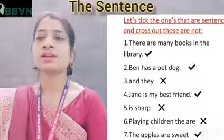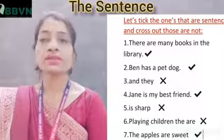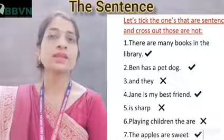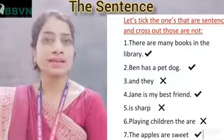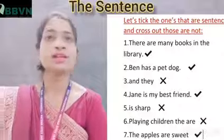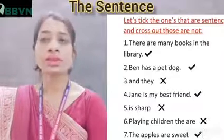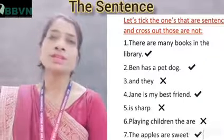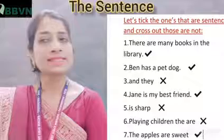Next, number 3: 'and they.' There are only two words and we get no meaning from them — nothing is clear. Also, there is no capital letter used and no full stop. So it is incomplete — it is not a sentence.